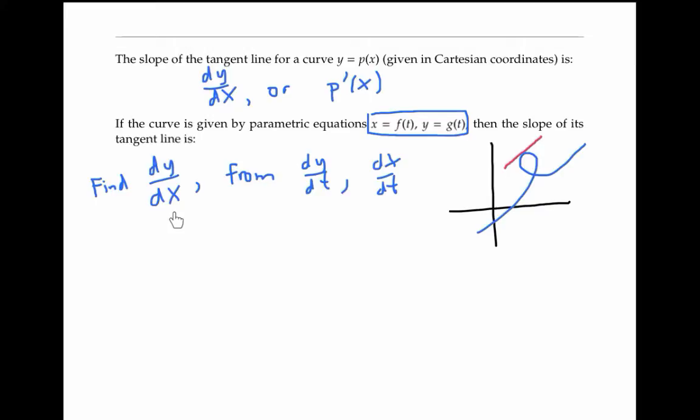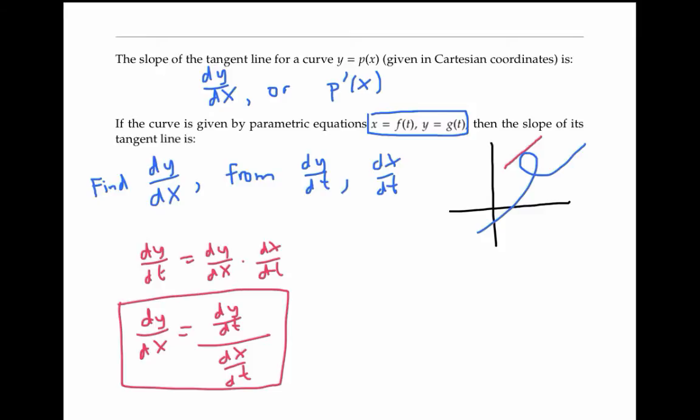To relate dy/dx to dy/dt and dx/dt, we use the chain rule. Recall that the chain rule says dy/dt = dy/dx × dx/dt. So, rearranging, we know that dy/dx = dy/dt ÷ dx/dt. And that's how we'll calculate the slope of our tangent line.